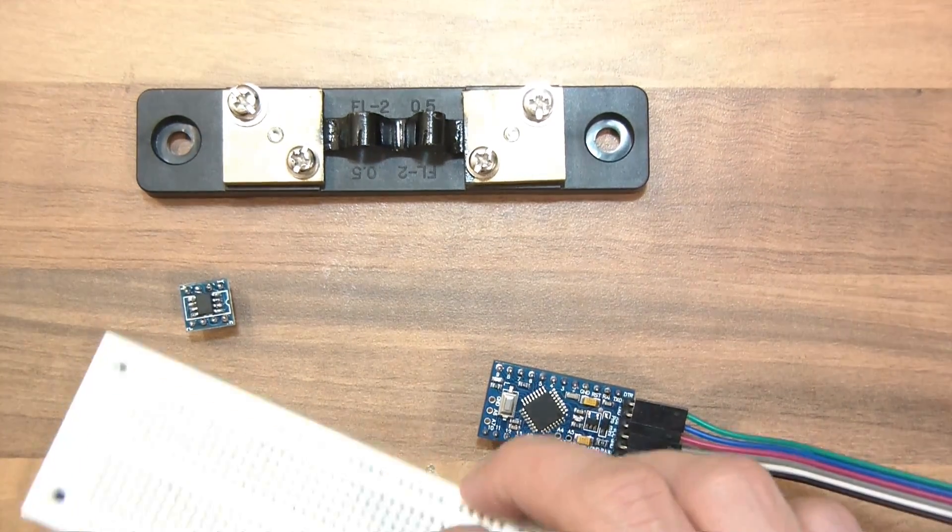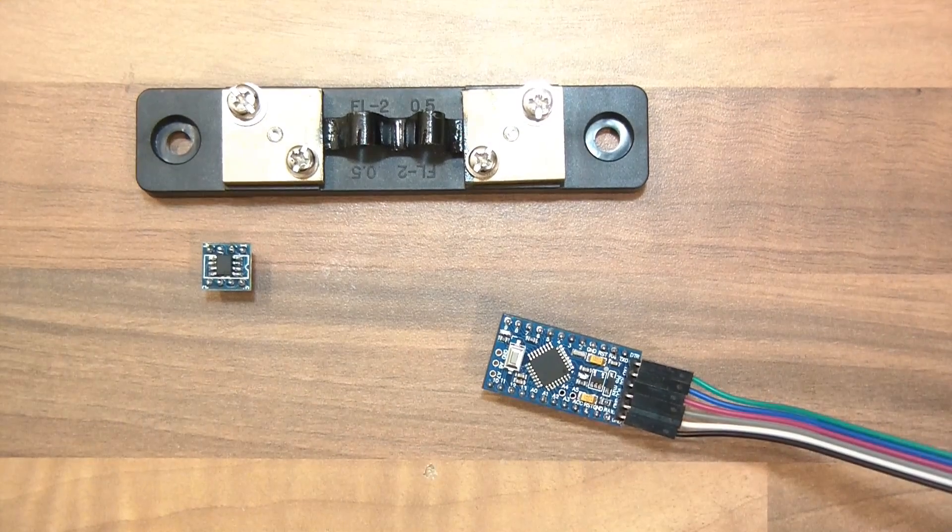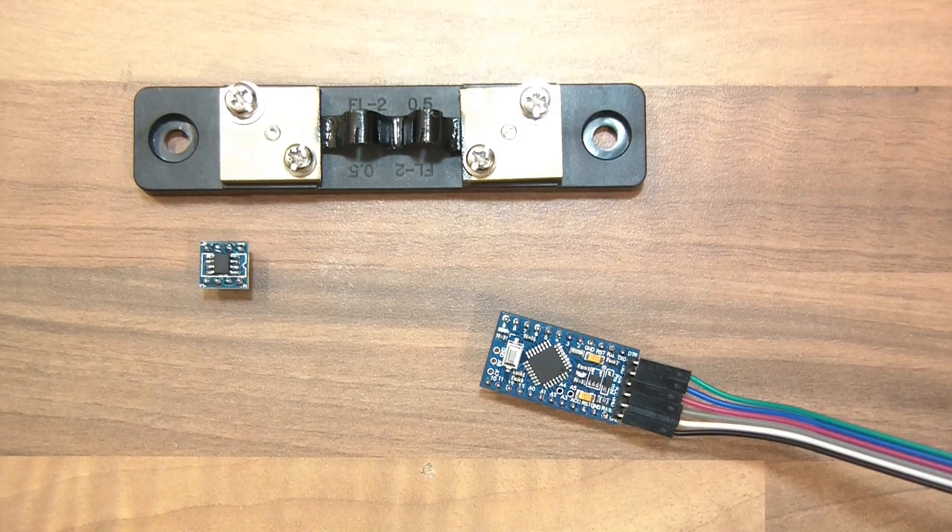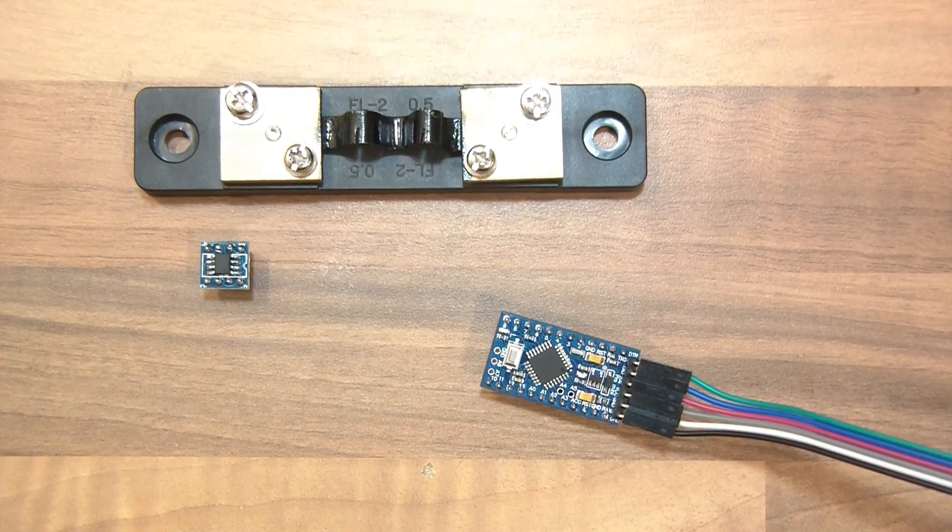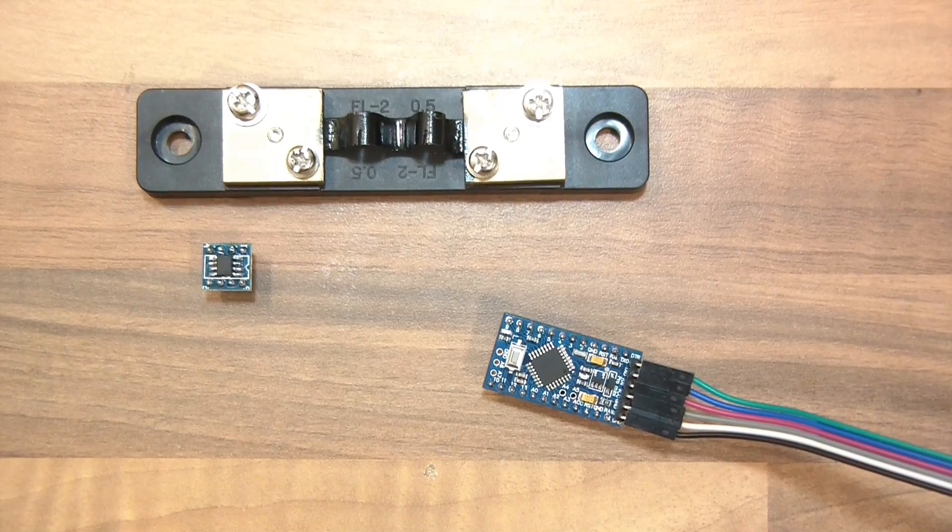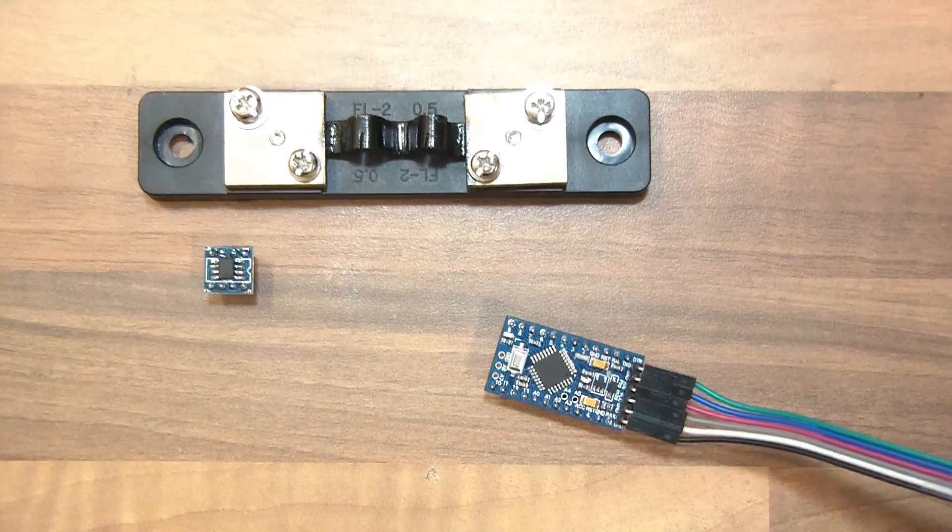A breadboard and a bunch of jumper wires. Oh also you are going to need two multimeters and I am going to be using a DC power supply too. Anyway let's start.